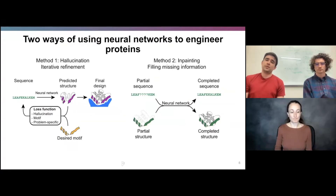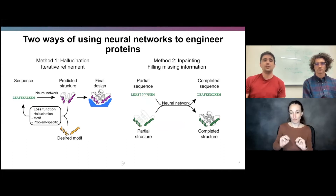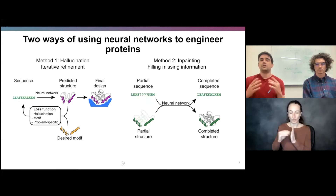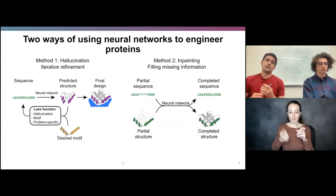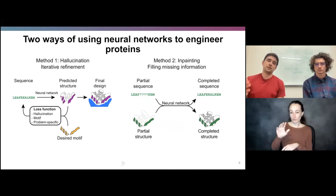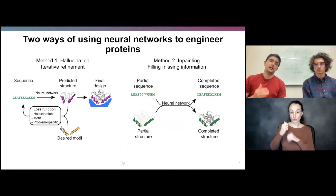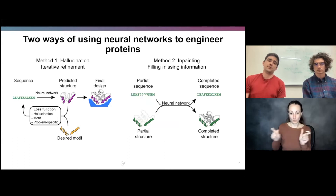The two methods we'll be talking about in this project: the first is called hallucination, which you can think of as an iterative refinement process. You start with a random sequence, and you have some desired functional motif that you use to score a predicted structure. You use the loss to update the sequence, and you iterate through that several times until you converge on a final design.